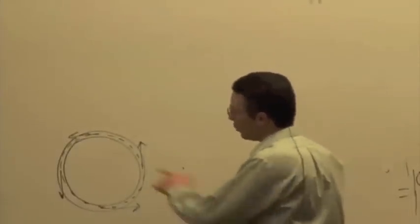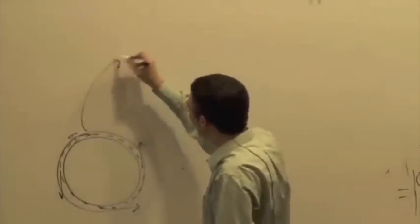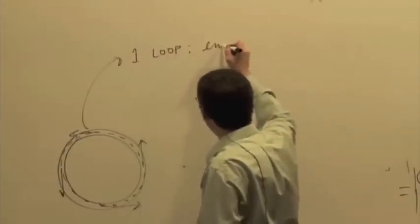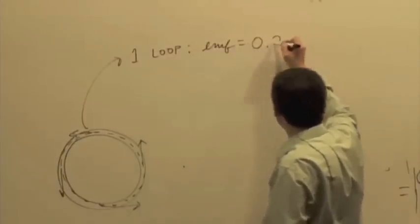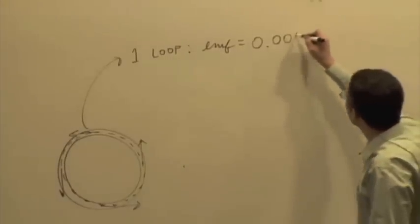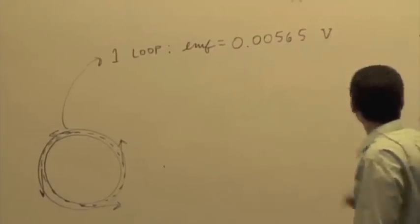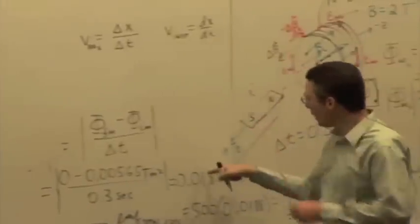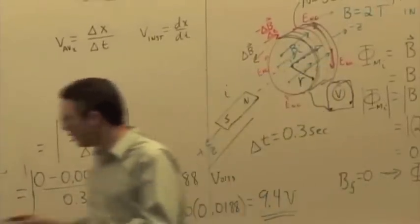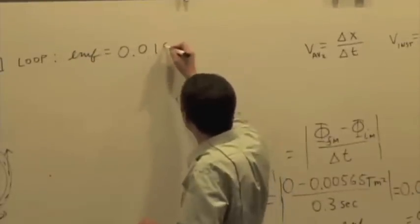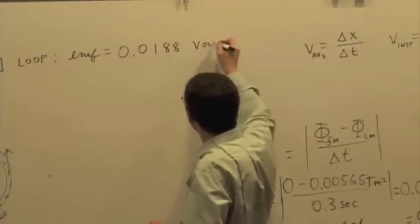And so now we want to think about what is the non-Coulomb electric field. Well, again, let me just look at this one turn. We said the EMF was, sorry, that was the flux. The voltage was 0.0188 volts.